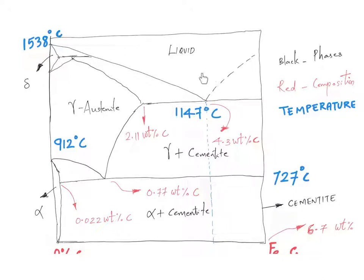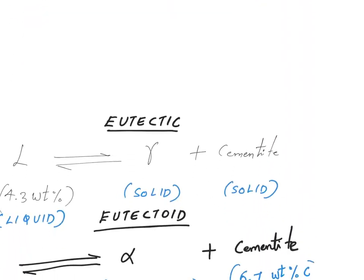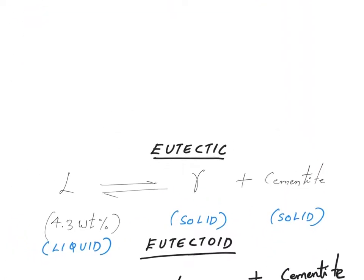Now if we closely look at this, what happens here is the liquid phase actually decomposes into two solid phases. That's the reaction happening at this particular point. The concentration of carbon is 4.3 weight percentage of carbon. That's the particular reaction happening at the eutectic point. If I write the reaction, it will look like this.